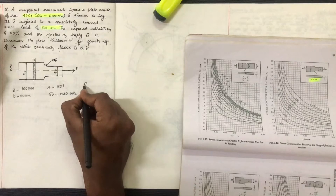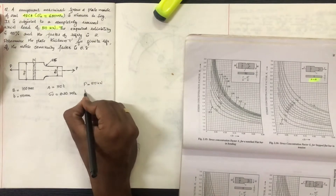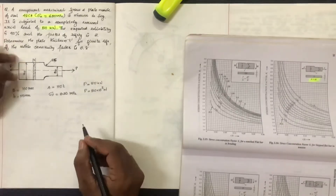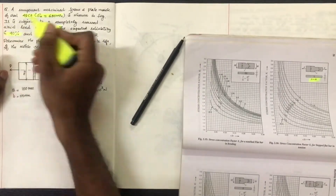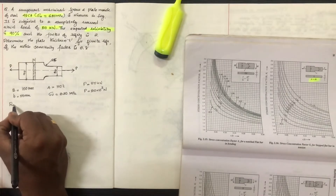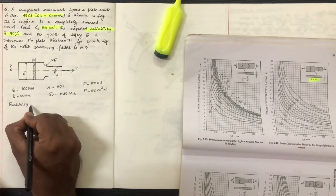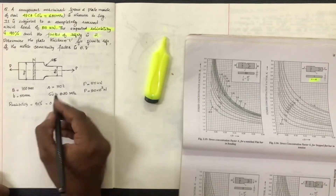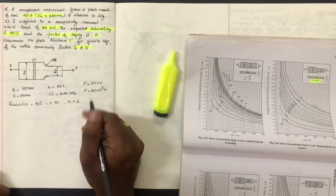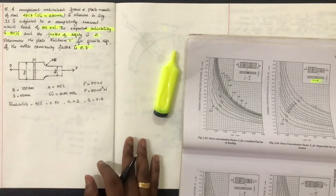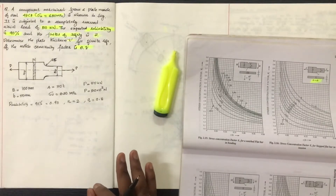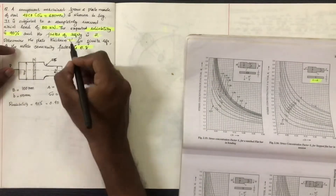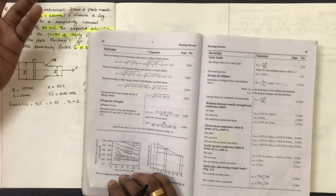P equals 50 kN, that is 50 × 10³ N. The expected reliability is 90%, so reliability factor equals 0.90. The factor of safety N equals 2. The notch sensitivity Q equals 0.8. We need to find the plate thickness T.